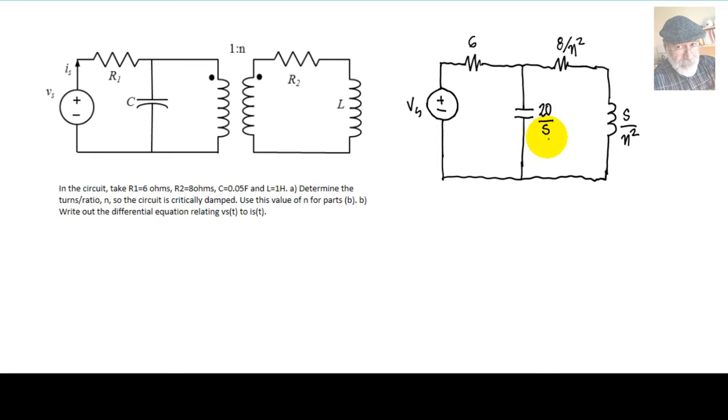What is this 20 over S? That is just the impedance of this 0.05 Farad capacitor. Remember? 1 over CS. That is 20 over S.